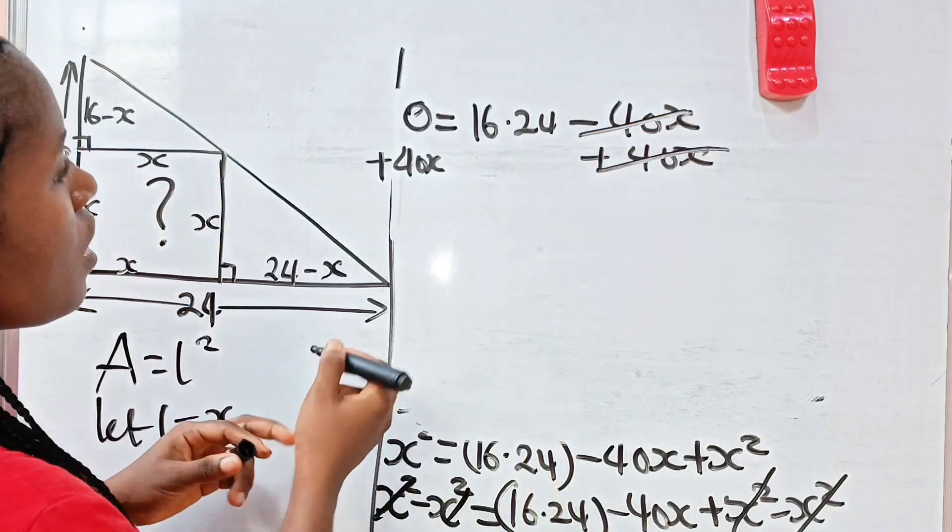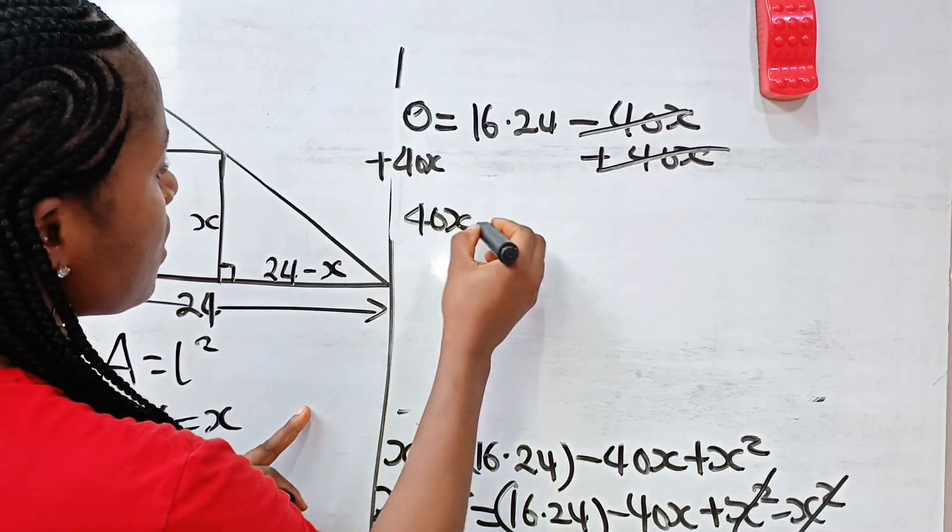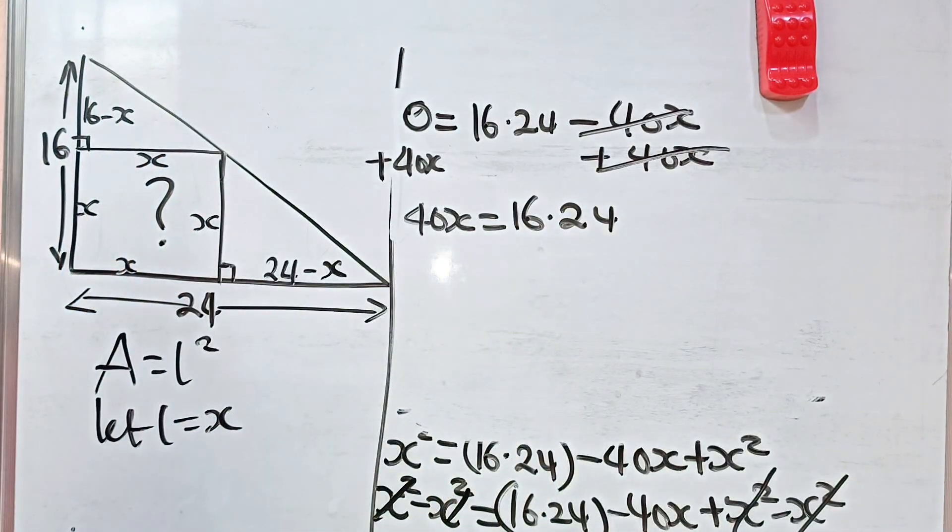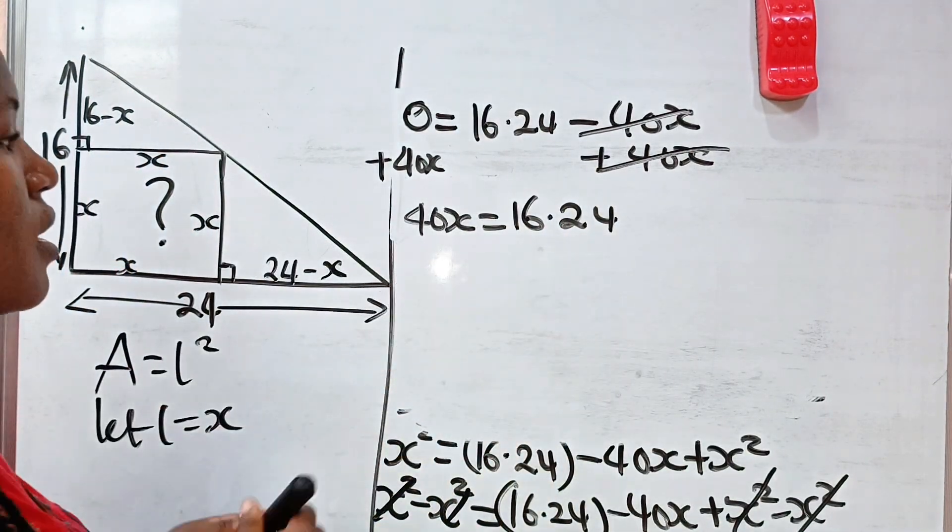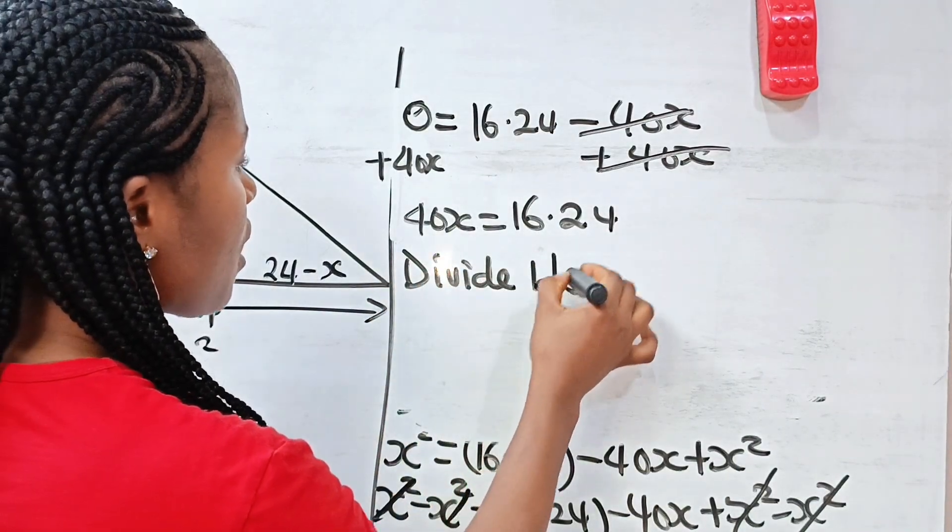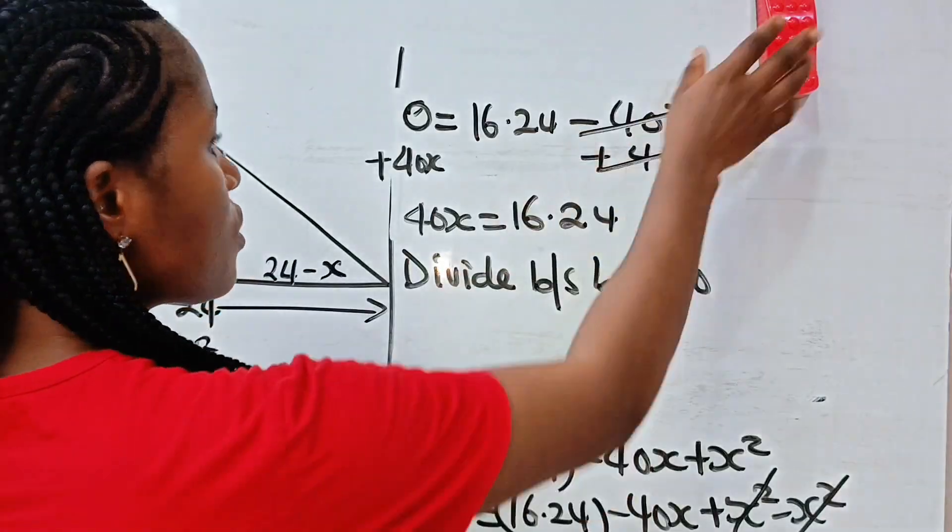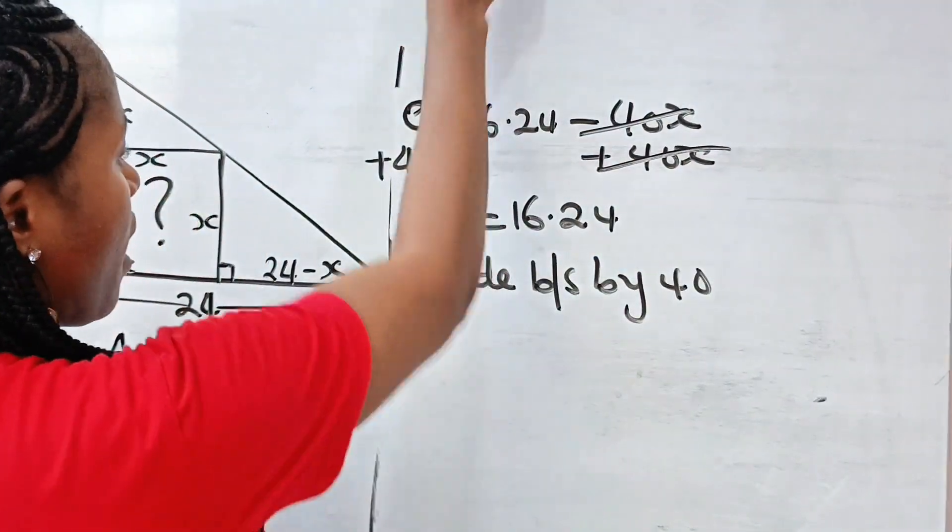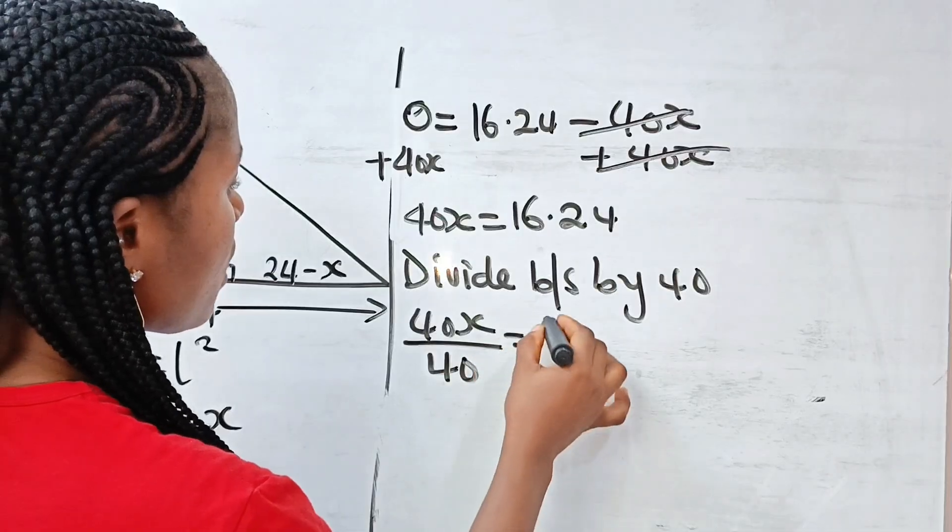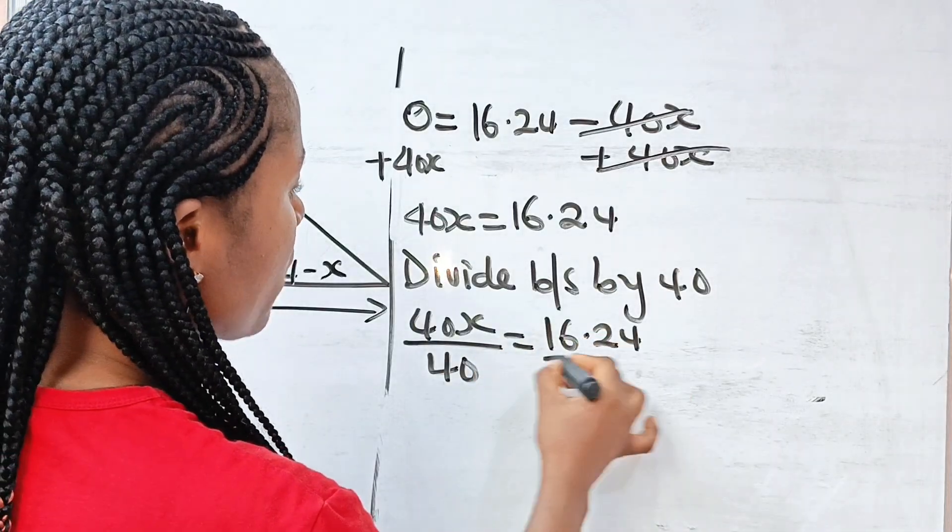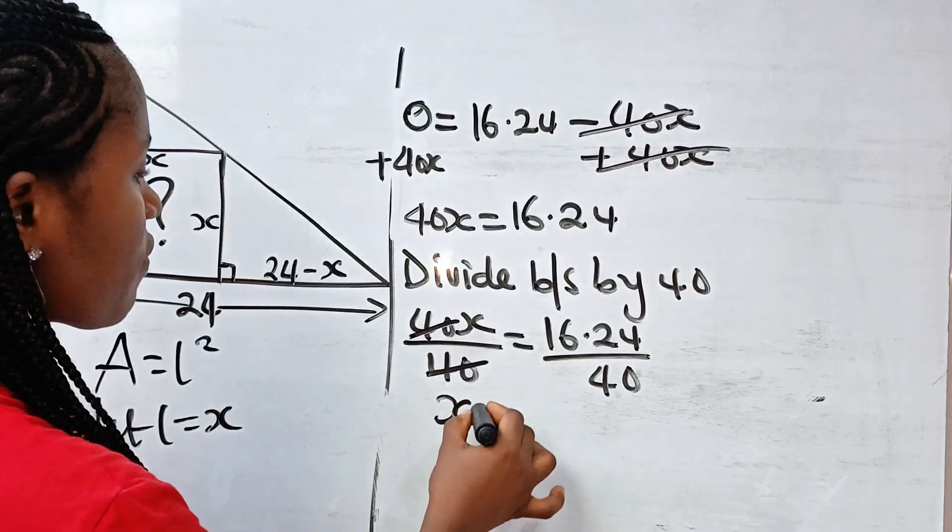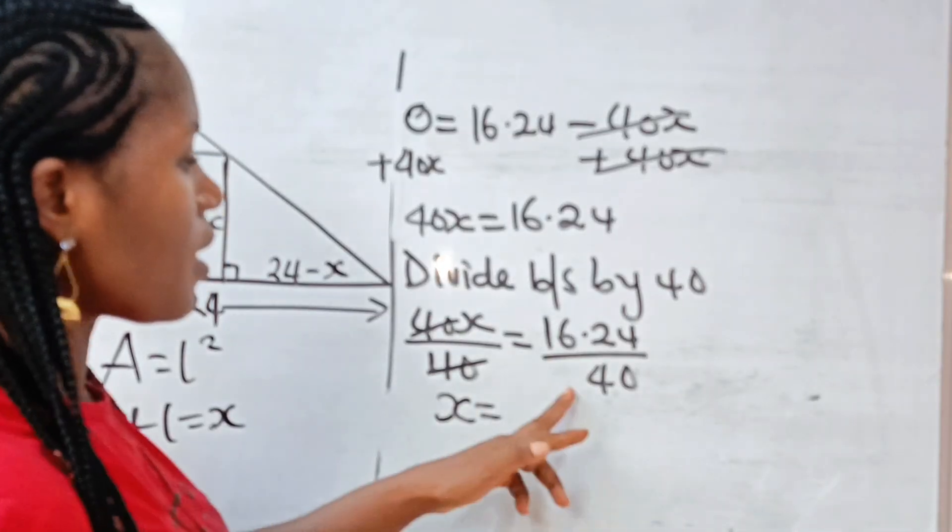So we have 40X is equal to 16 multiplied by 24. Now, let's divide both sides by 40. So we will have 40X divided by 40 is equal to 16 multiplied by 24 divided by 40.